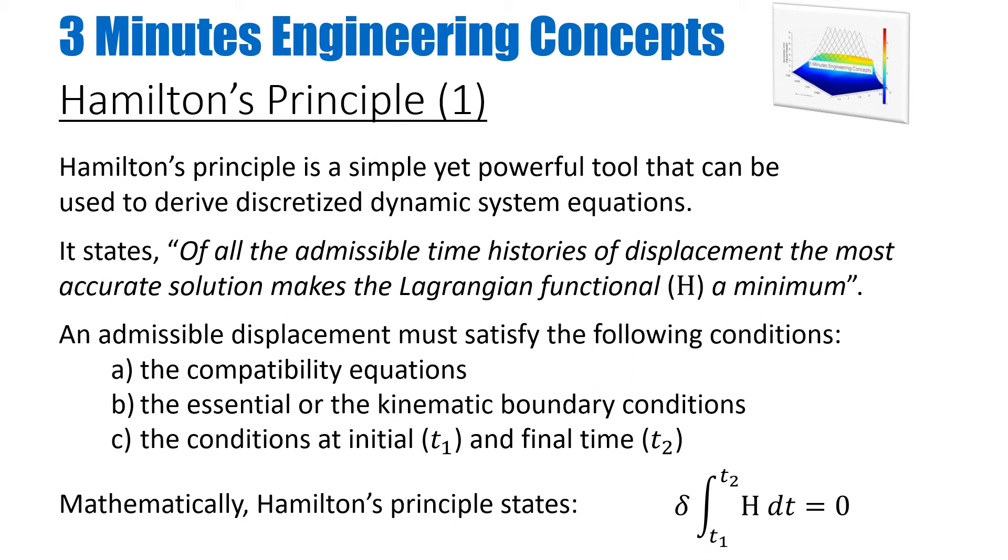This admissible displacement must satisfy some conditions. One of them is called the compatibility equation, meaning it should be compatible with your Lagrangian function in the geometry domain. It should satisfy all the essential and kinematic boundary conditions. By essential, it means you're applying forces on the system, and by kinematic, it means you're applying displacements on the system as boundary conditions. It should also satisfy the conditions at initial and final time. Mathematically, you can say that if I know the H function, then the variation of H, denoted by small delta, times dt should be equal to zero as per the mathematical principle.